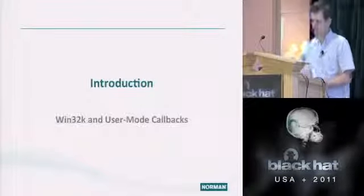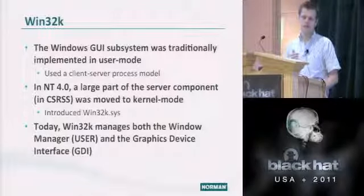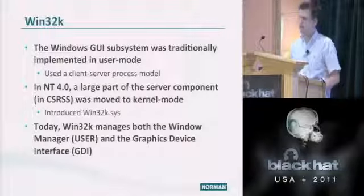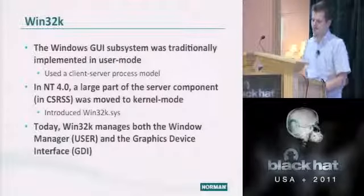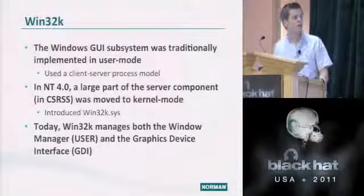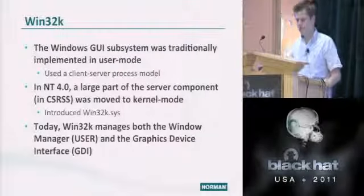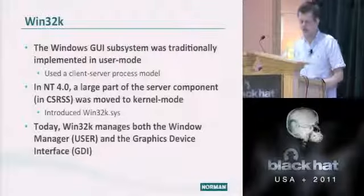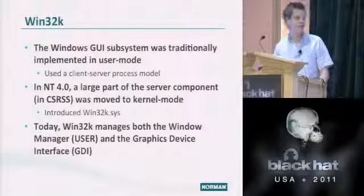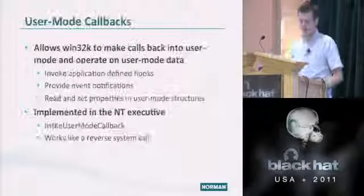The Windows GUI subsystem was traditionally implemented entirely in user mode, using a client-server process model — the client being the application and the server being CSRSS. In NT 4.0, the server component was moved to kernel mode, which introduced Win32K.sys — about 15 or 16 years ago. Today, Win32K manages both the window manager and the graphics device interface.